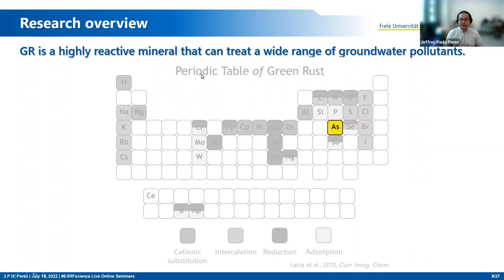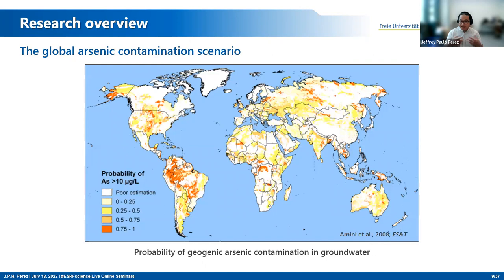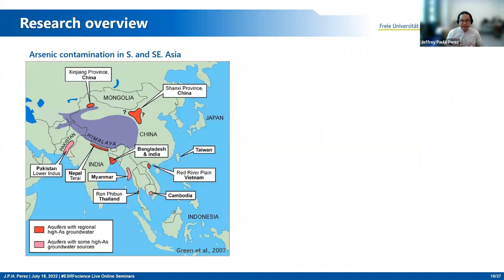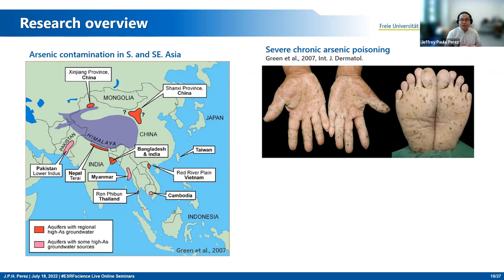Arsenic is still a global environmental and public health concern, affecting 150 million people worldwide. The majority of affected regions are in South and Southeast Asia — for example, West Bengal, Indonesia, Bangladesh, Pakistan, and Vietnam. What makes arsenic dangerous is that it is a tasteless, odorless, and colorless pollutant. Chronic exposure to arsenic can lead to painful skin lesions, as you can see in this image, neurodevelopmental disorders, cancer, and sometimes death.